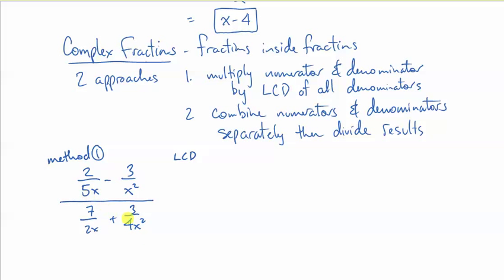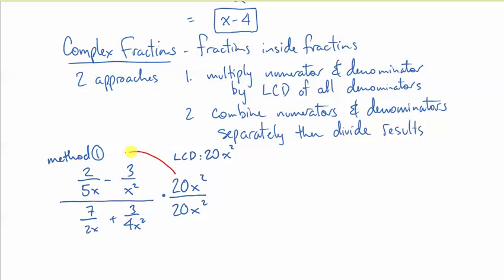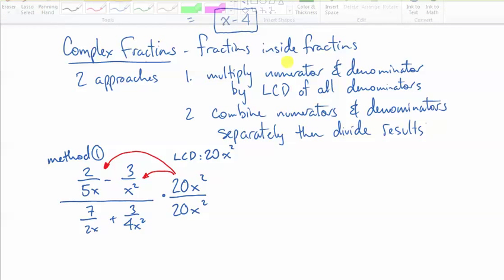Now, looking at the 5 and the 4 and the 2, my LCD is going to have to have the coefficient of 20. Looking at x and x², I'm going to need x². So, I multiply by 20x² on the numerator and on the denominator. Now, the numerator, that's going to multiply onto this rational expression and onto this rational expression. Let's do that and see what that looks like.